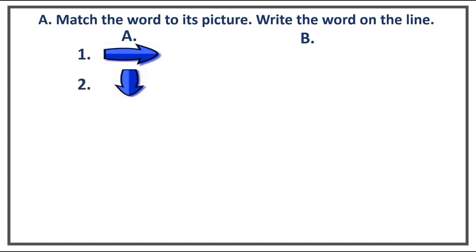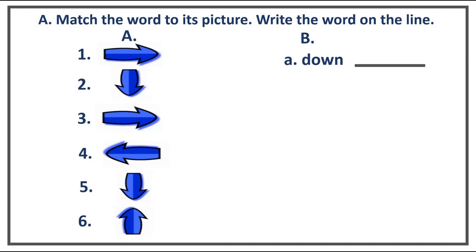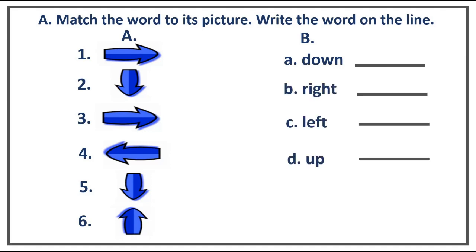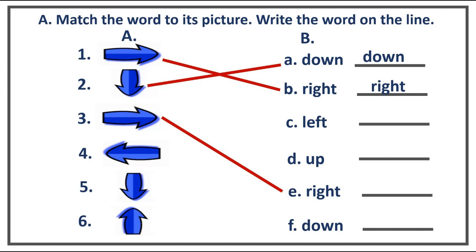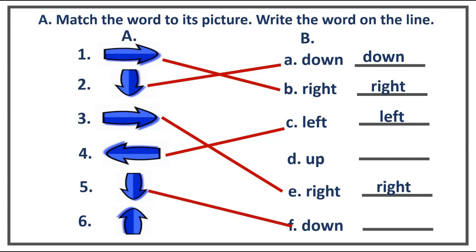1, 2, 3, 4, 5, 6. A, B, C, D, E, F. Number 1 is letter B, right. Number 2 is letter A, down. Number 3 is right, letter E. Number 4 is letter C, left. Number 5 is letter F, down. And number 6 is letter D, up.